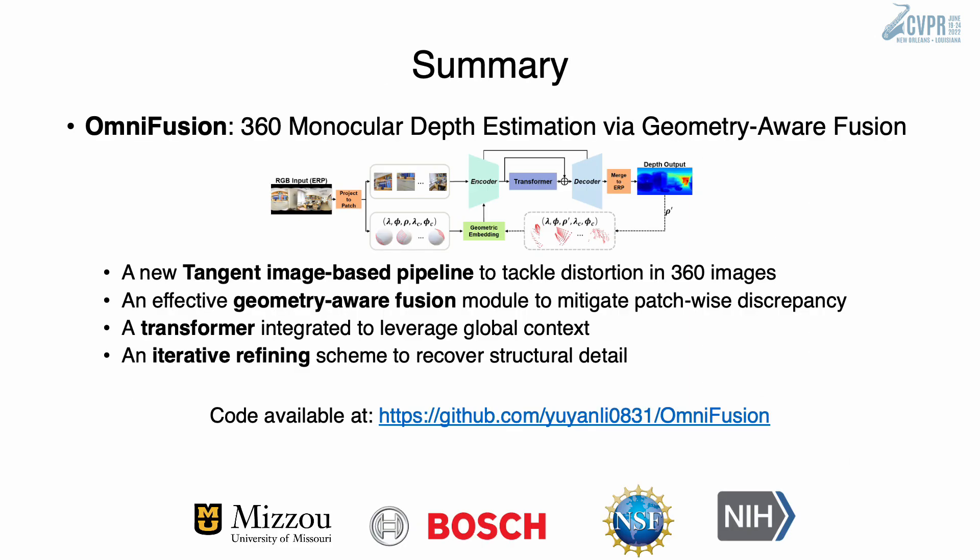To summarize, we propose a 360 monocular depth estimation pipeline, OmniFusion. We utilize tangent image-based representation to tackle 360 distortion. We incorporate geometry-aware fusion, transformer, and iterative refining to effectively address the discrepancy issue. If you are interested in our work, please use the link to access our code.